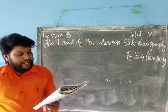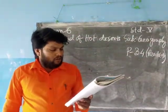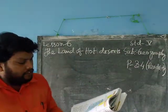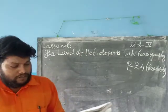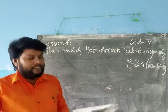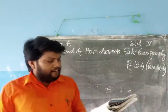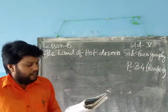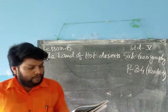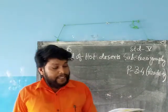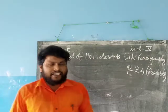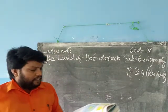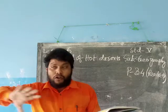Hot deserts are places with hills of sand, scorching heat, and hardly any water. These hills of sand are called sand dunes. Hot deserts are places with hills of sand, scorching heat, and hardly any water — these hills of sand are called sand dunes. They keep shifting due to strong winds. That means sand dunes move from one place to another place due to the strong winds.